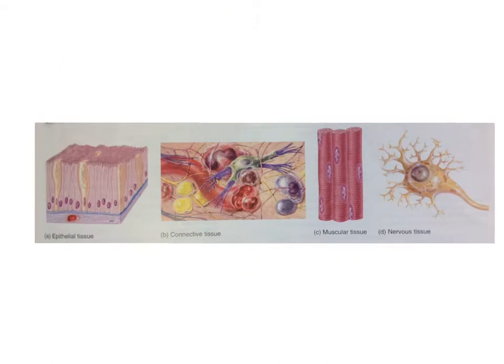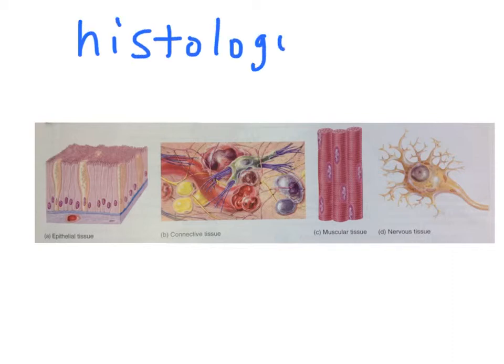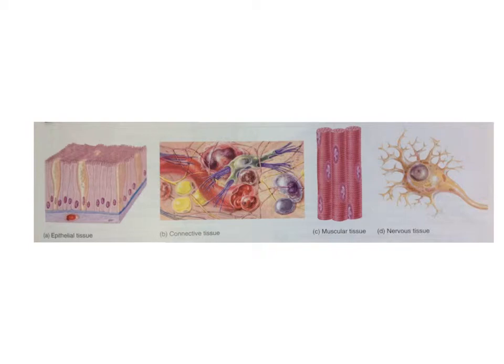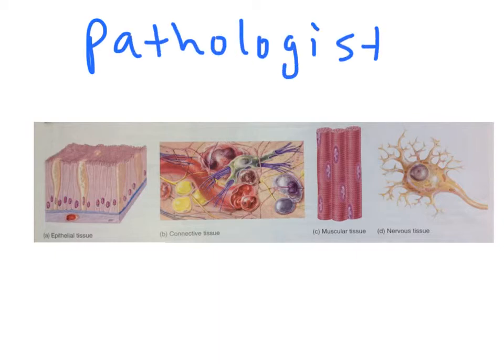The specialized branch of biology that studies tissues is called histology. The prefix histo refers to tissues. Specific changes to tissues are indicative of disease, and it is up to a pathologist to help physicians with their diagnosis based upon these changes.